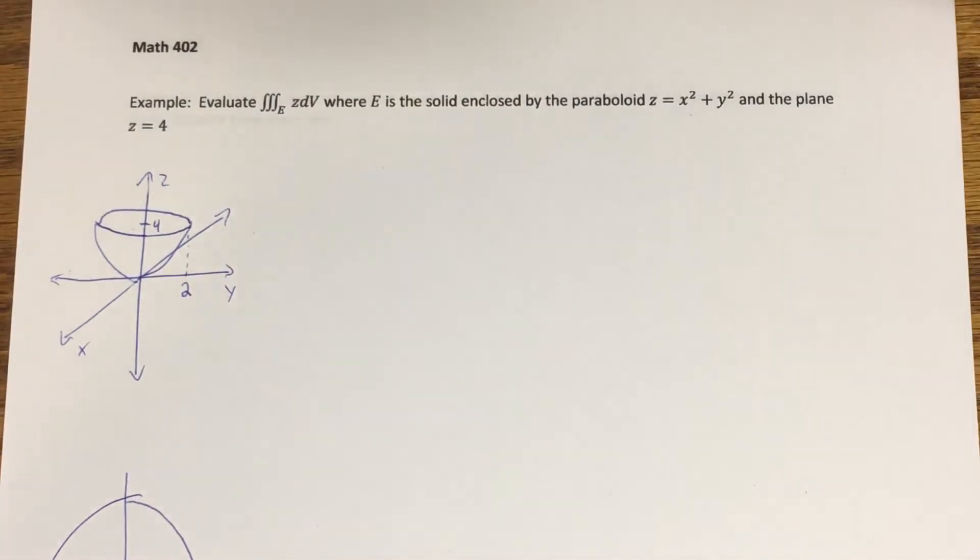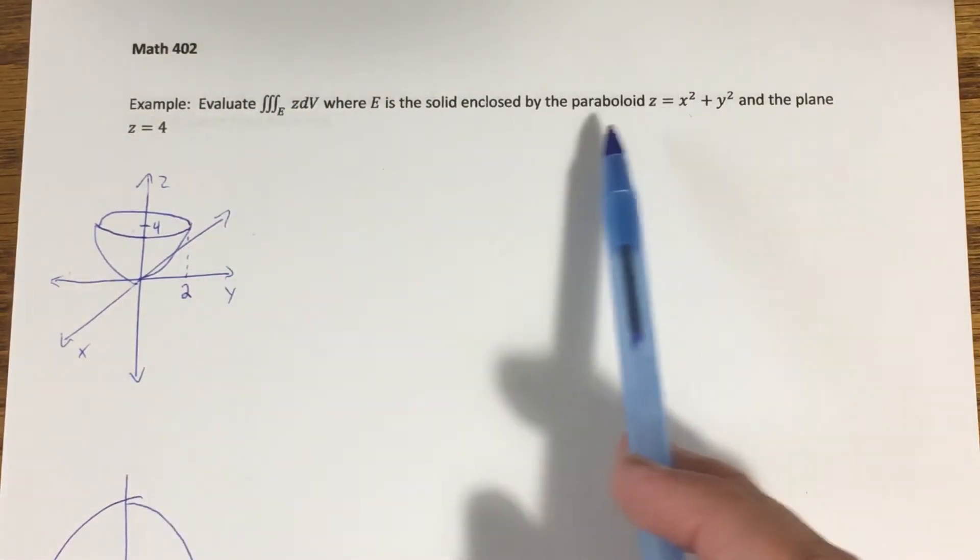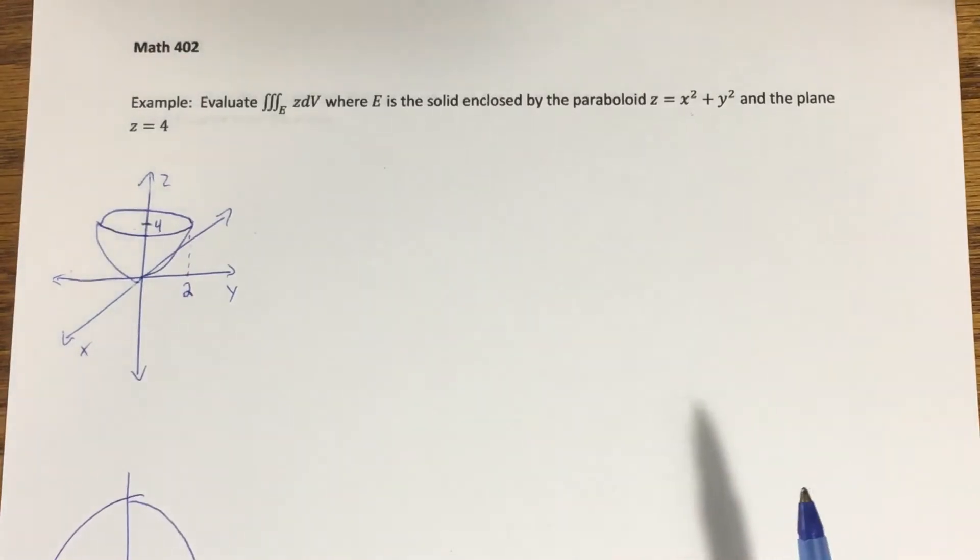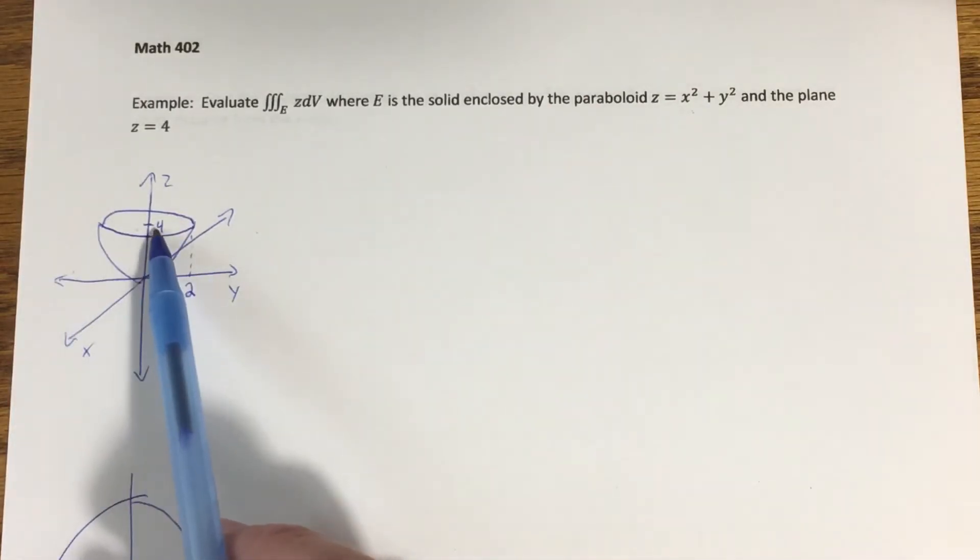All right, so here's an example of a triple integral that we're going to evaluate by converting into cylindrical coordinates first. The description of the solid E that we're integrating over is a solid enclosed by the paraboloid z equals x squared plus y squared and the plane z equals 4. So the paraboloid I kind of sketched out here and the plane z equals 4 is going to cut the top of this thing off. So here's sort of a picture of the solid that we're looking at. Let me call that E.